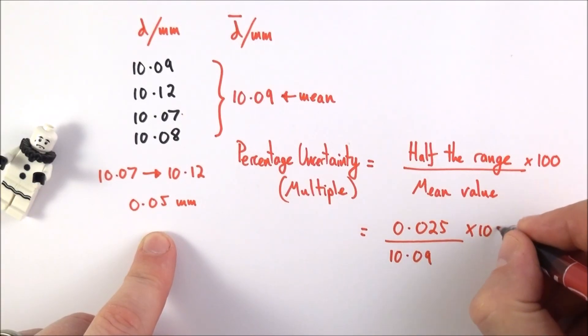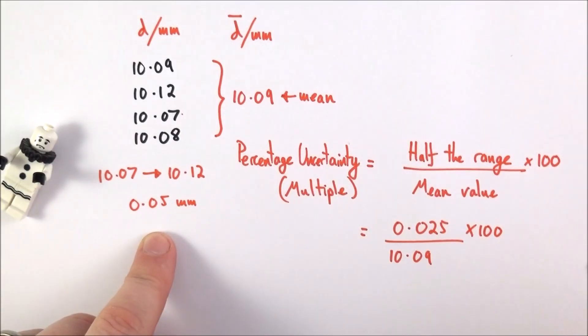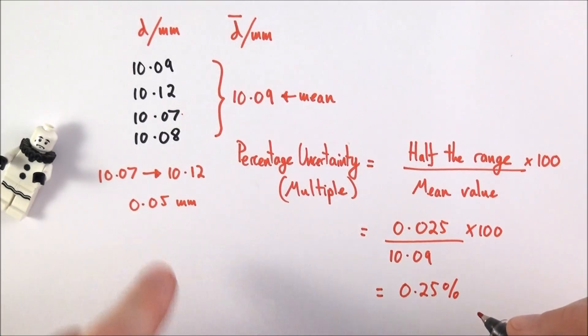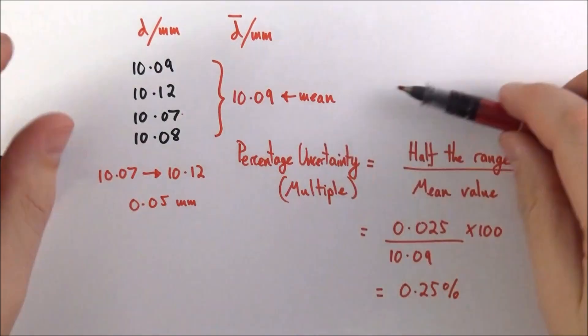We divide that by the mean value, which is 10.09, we multiply it by 100 so we can actually get it as a percentage. And if we do that, we find that the percentage uncertainty in this case is equal to 0.25 percent.